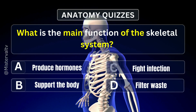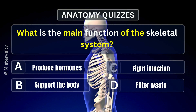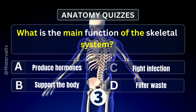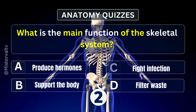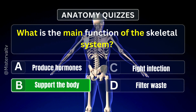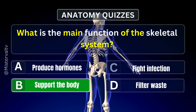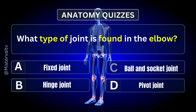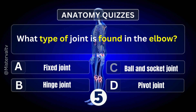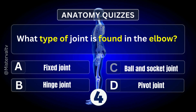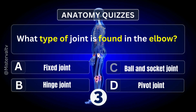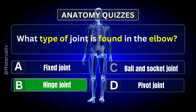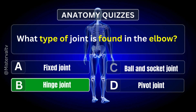What is the main function of the skeletal system? Answer. B. Support the body. What type of joint is found in the elbow? Answer. B. Hinge joint.